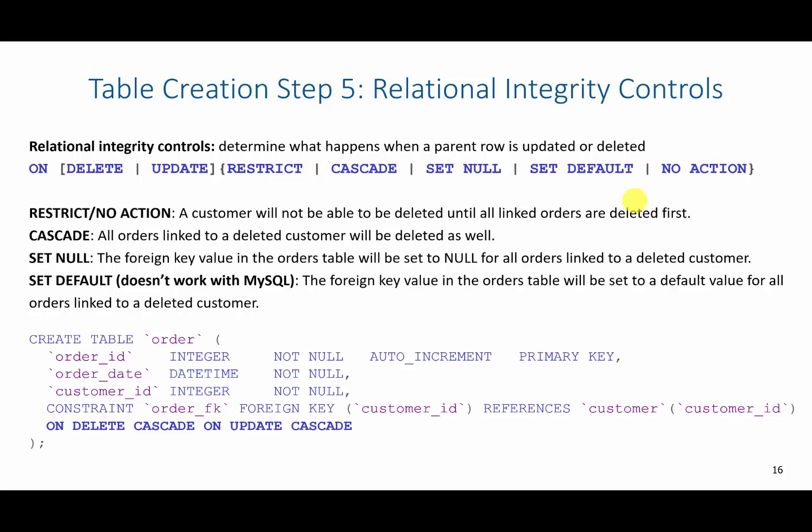Basically what happens, if I delete or update a value that is referenced by a foreign key column, what's going to happen? So restrict no action is default. This basically means that if I were to delete a customer, it would fail because it's linked to some orders in the order table.